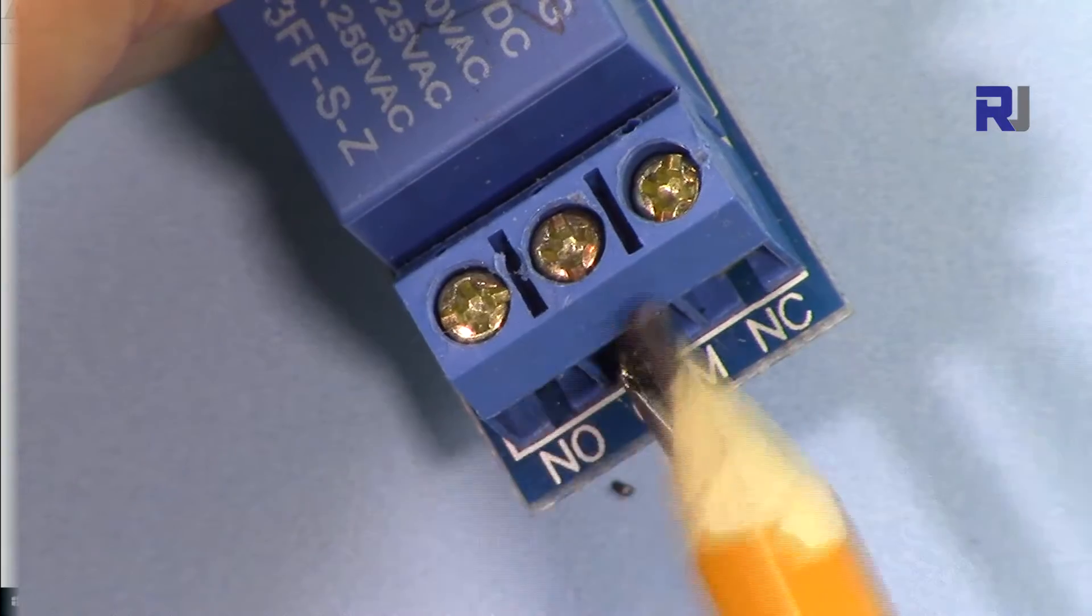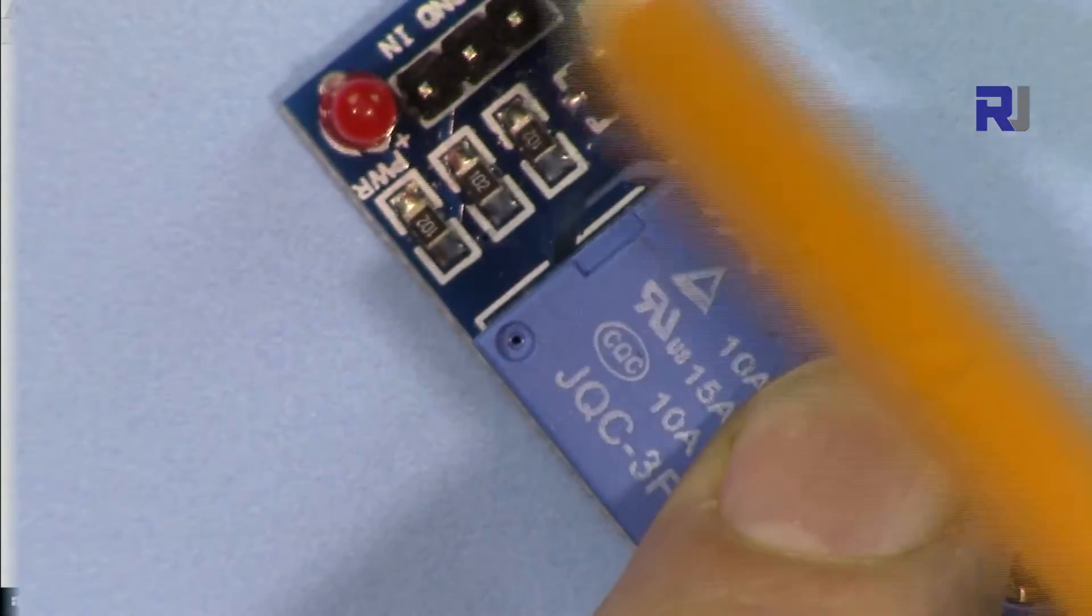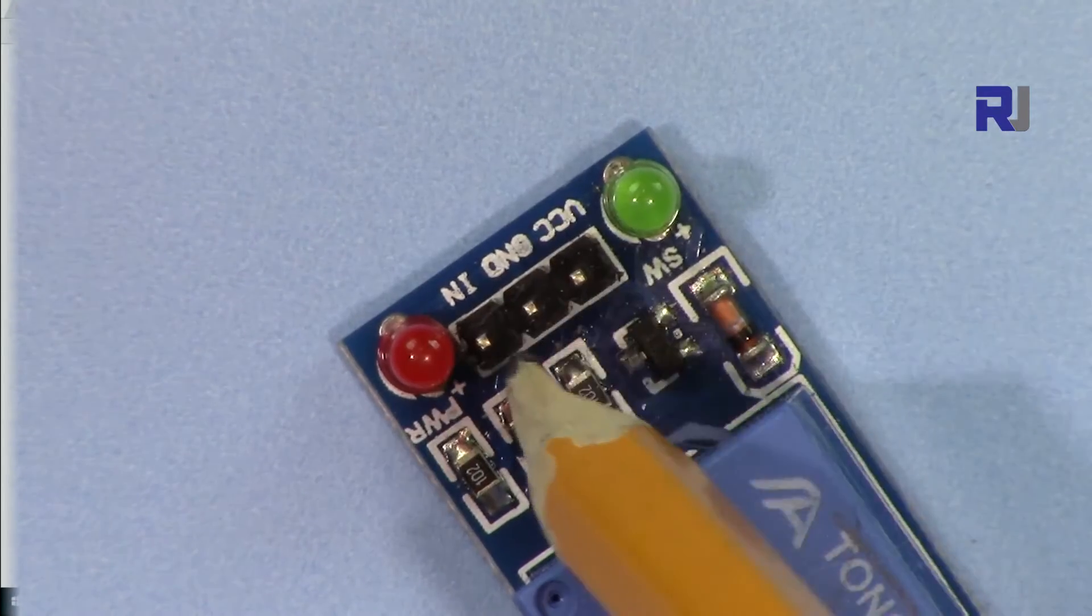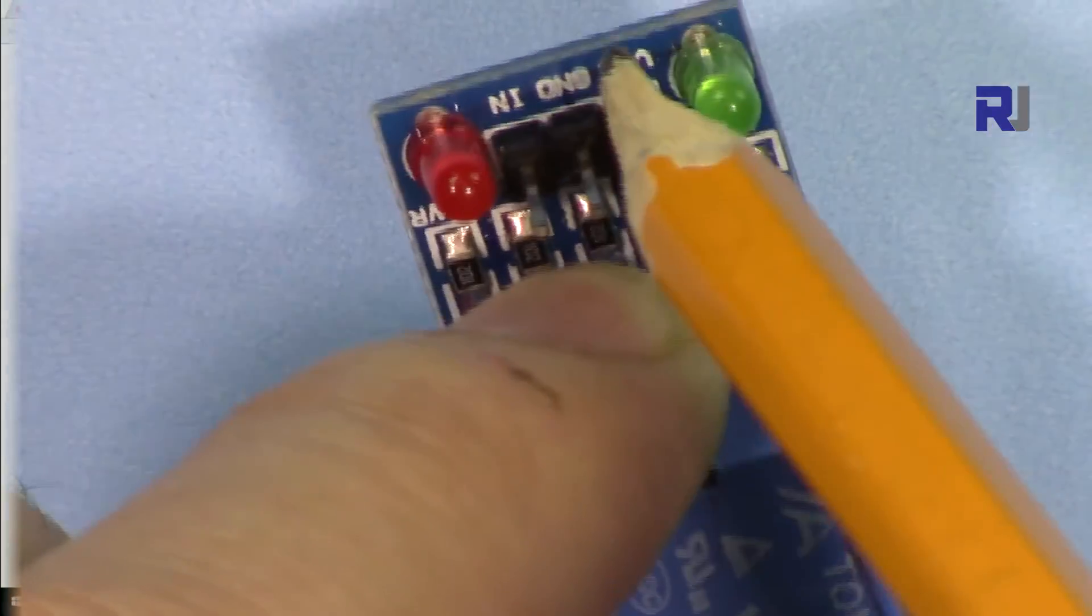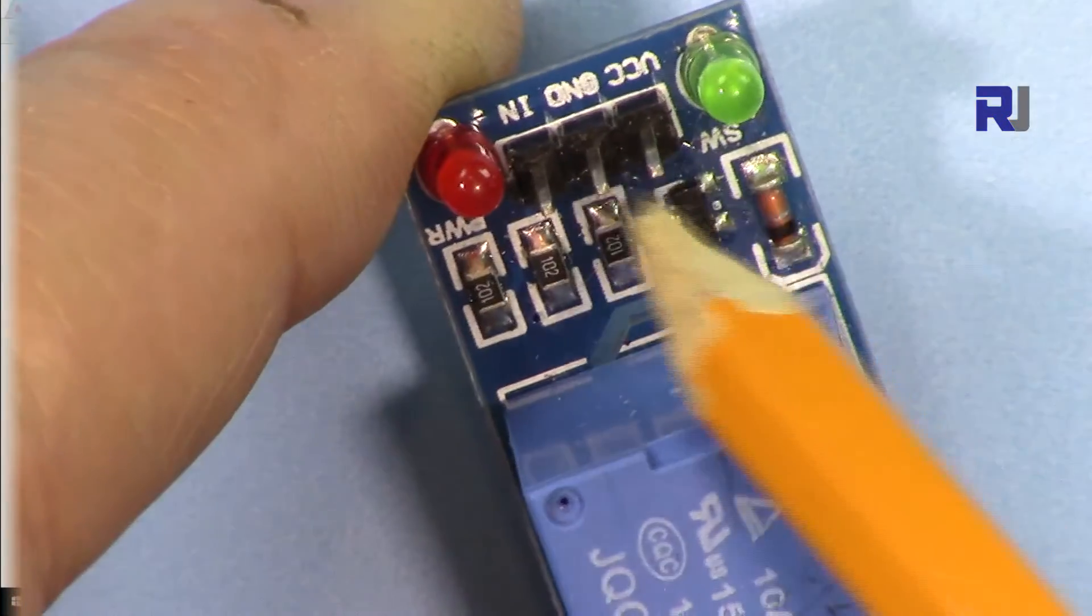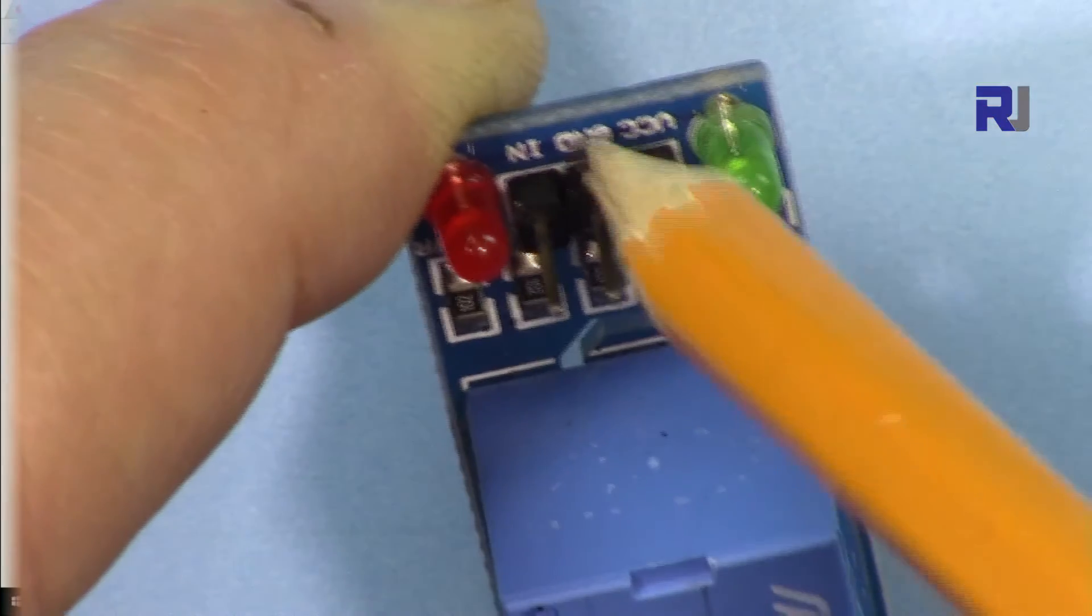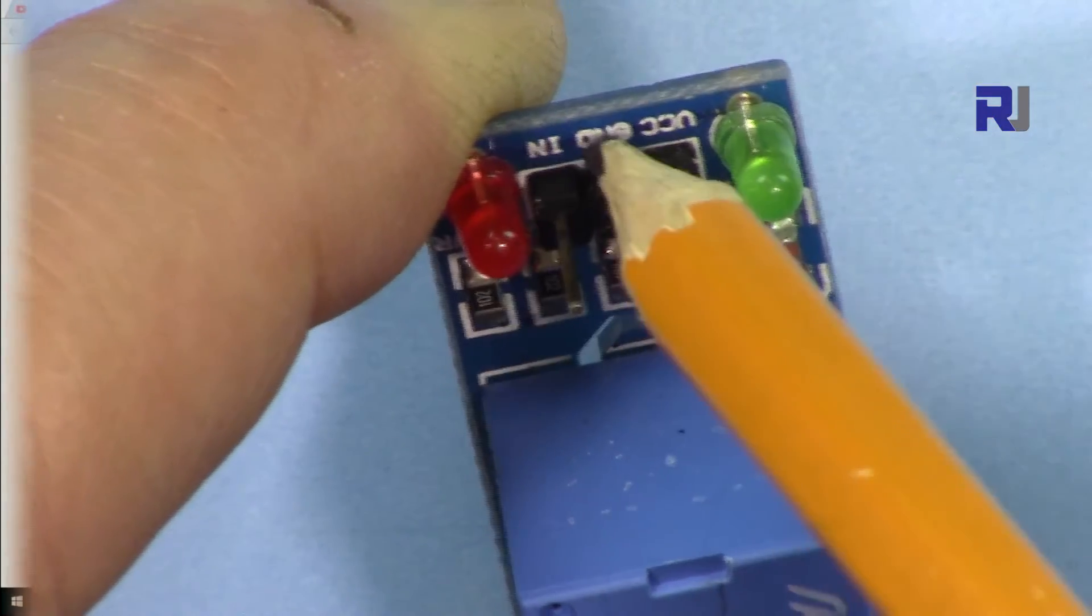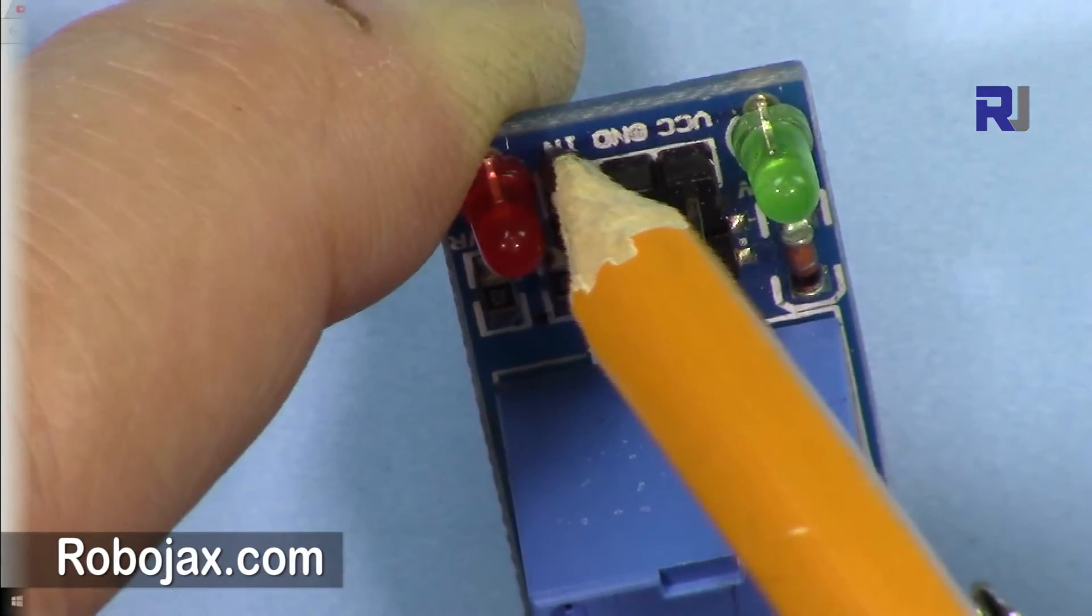We have two LEDs here. This red LED is for when it gets power, and then this will activate when it gets signal. The three inputs or the three pins for the relay are VCC - this is VCC and this is ground. You will connect this to 5 volts and this is connected to the ground or negative wire. And this is input, the input is where the signal comes.